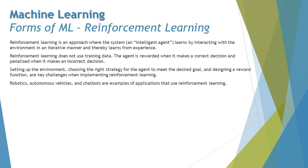The third form is reinforcement learning — an approach where an intelligent agent learns by interacting with the environment in an iterative manner and learns from experience. Reinforcement learning does not use training data at all; it uses live data based on what's happening in real time. The agent is rewarded when it makes a correct decision and penalized when it makes an incorrect one. Setting up the environment, choosing the right strategy, and designing a reward function are key challenges in implementing reinforcement learning.